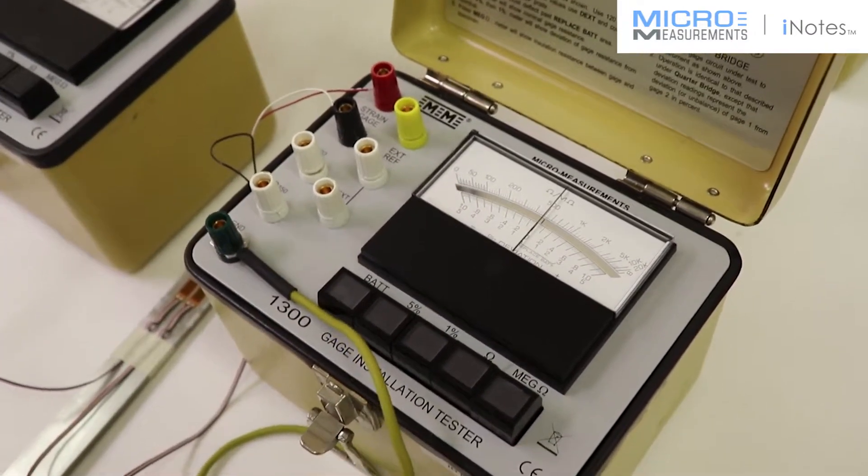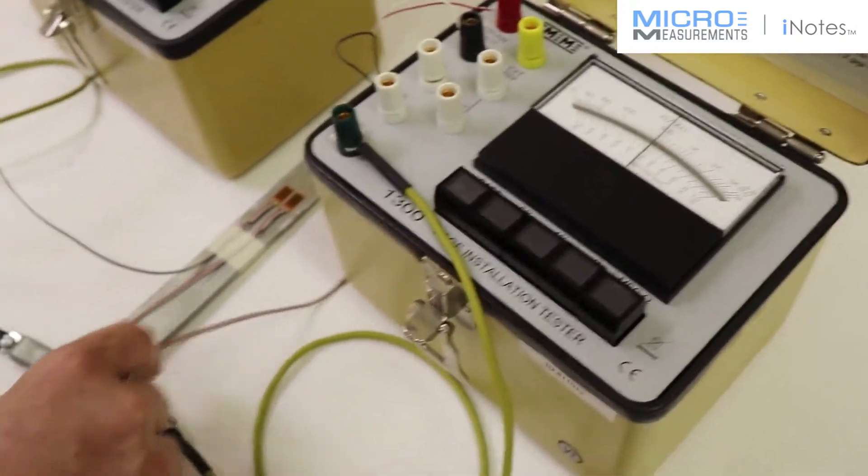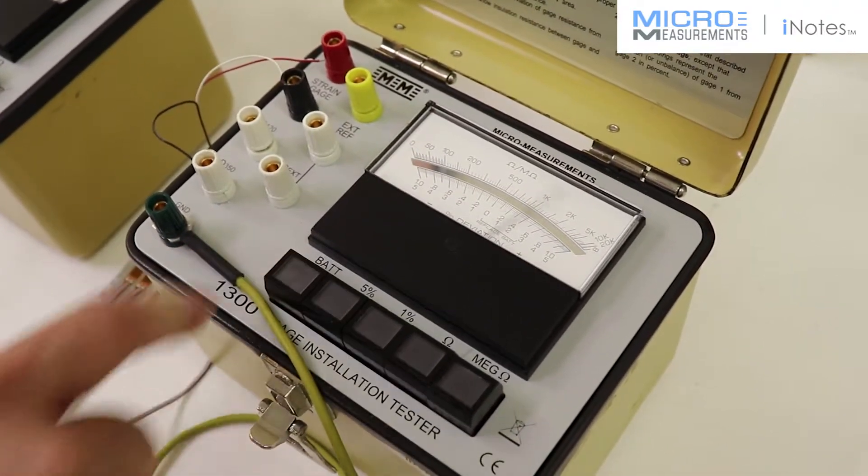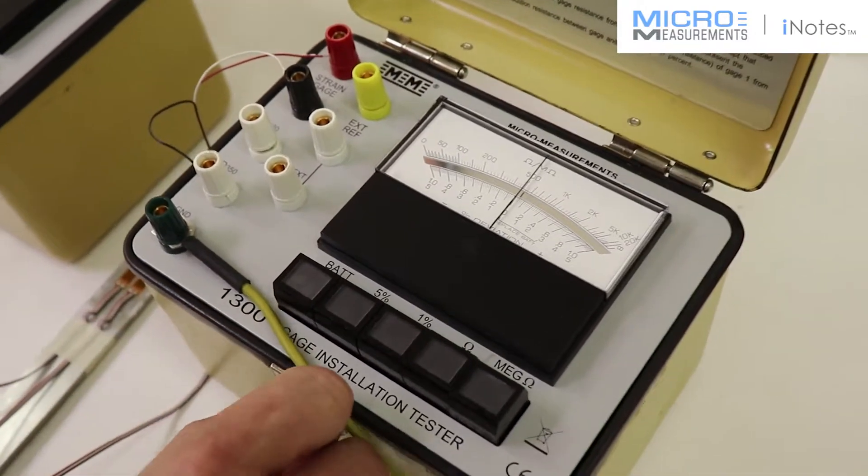Again, the ground strap is connected. That ties into the end of the beam. We'll check the battery on this box. It goes full scale. That's a good indicator that the batteries are good.